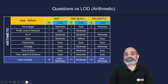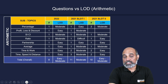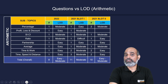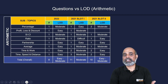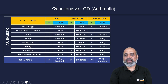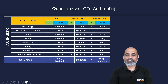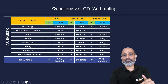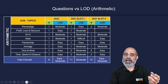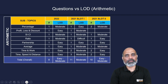In 2021 slot two, there were two moderate-level percentage questions, and two questions each on time and work and time/speed and distance. So just three subtopics — percentage, time and work, and time/speed and distance — made up 60% (six out of ten) of the arithmetic questions. The rest were easy to moderate. Overall, arithmetic questions have not exceeded a moderate difficulty level, with at most one or two difficult ones.